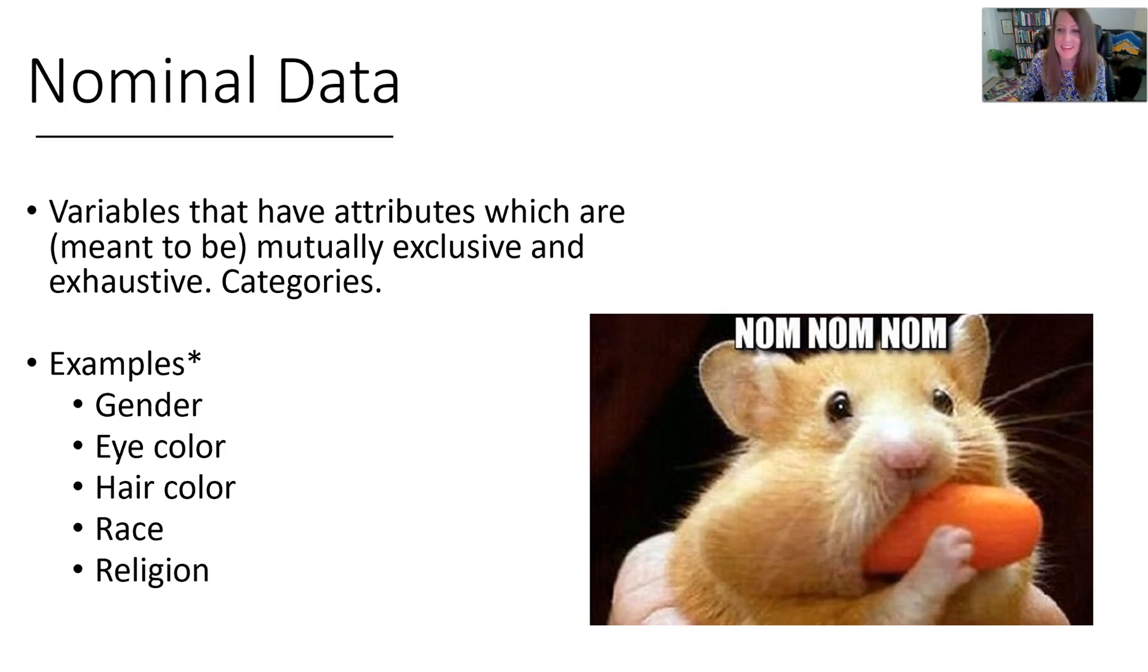My memory trick here to remember this is that when I see nominal, I think nom nom nom, like people eating. Think about a questionnaire that asks you what your favorite type of food is, with a checklist of Indian, Italian, Chinese, Mexican, American food. That's nominal data because you would be selecting one category, and that's how the data would be shown - which category you picked or identified with.